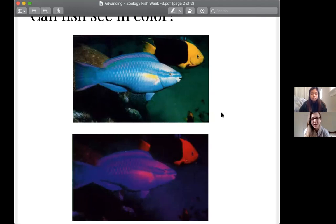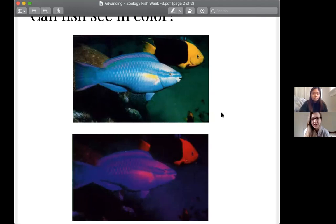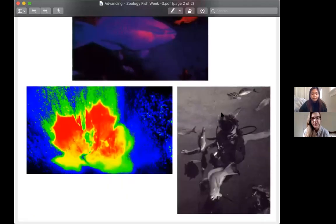And then if we go down to the very last two pictures here, some fish may even see more than just color vision. So if you look at the picture on your left hand side, that is infrared vision. And that is seen in a few species of fish, a few kinds of fish, but it's not very widespread.